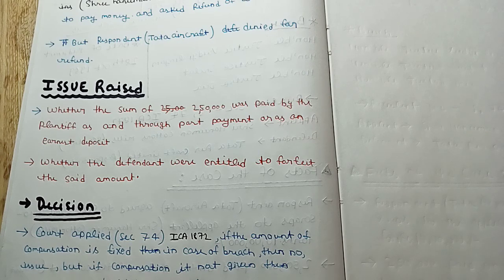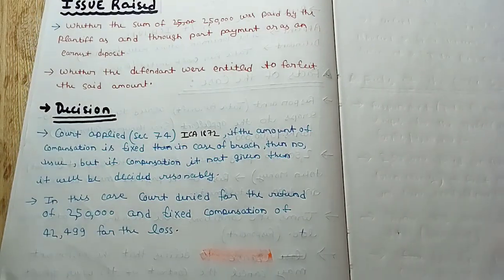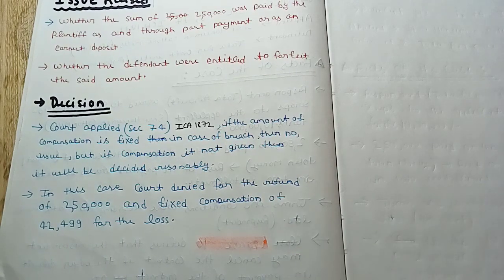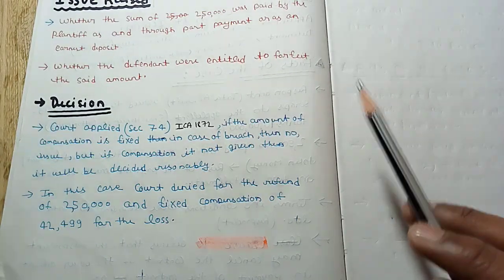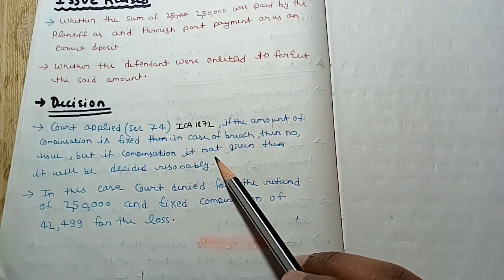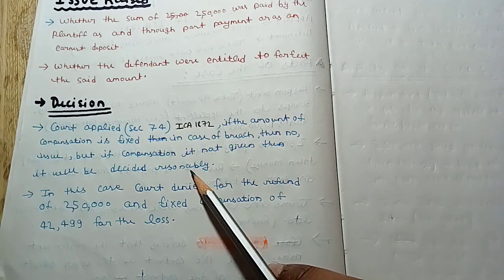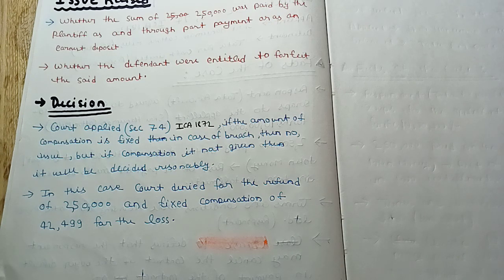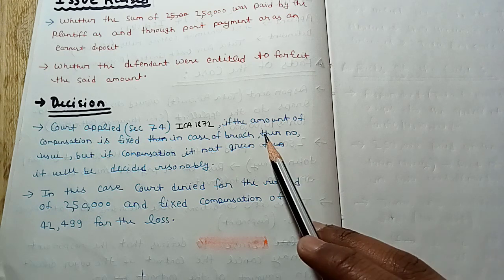The court applied Section 74 of the Indian Contract Act. The court held that if the amount of compensation is fixed in the contract in case of breach, then there is no issue. But if the compensation is not specified in the contract, it will be decided reasonably. If the contract terms mention compensation in case of breach, the court will determine it on a reasonable basis.